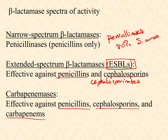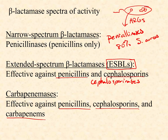Fortunately, carbapenemases are still very uncommon — we've seen a handful cropping up with small outbreaks here and there, but they're not widespread yet. To step back, we're talking about bacteria with their chromosome containing housekeeping genes, and genes for acquired resistance found on plasmids. One of these antibiotic resistance genes, or ARGs, could code for any one of these three types of beta-lactamases.